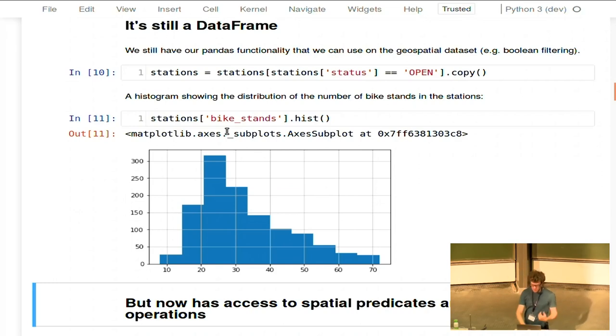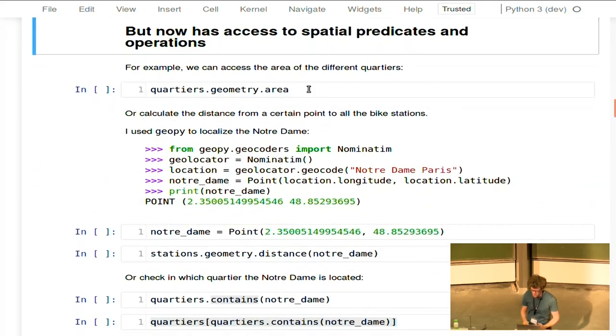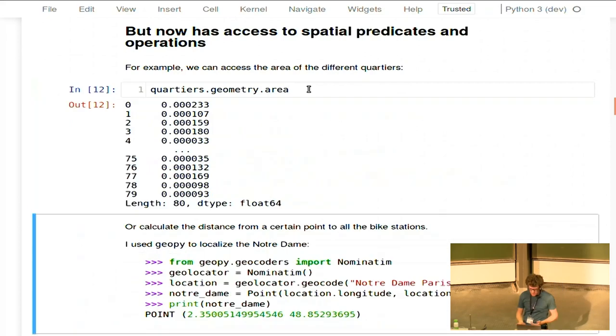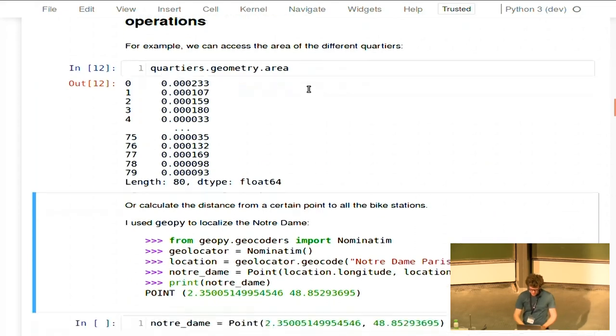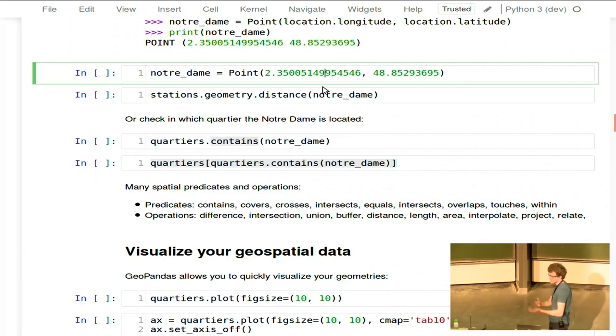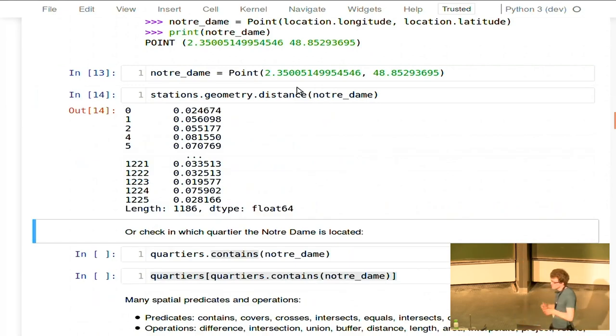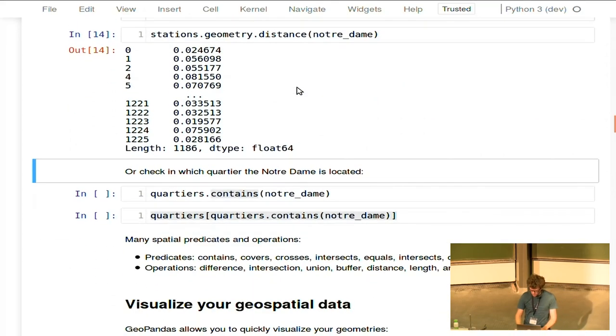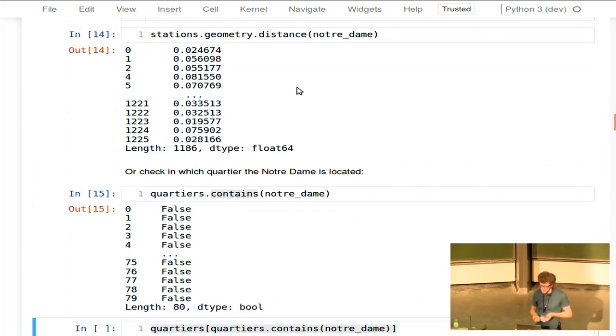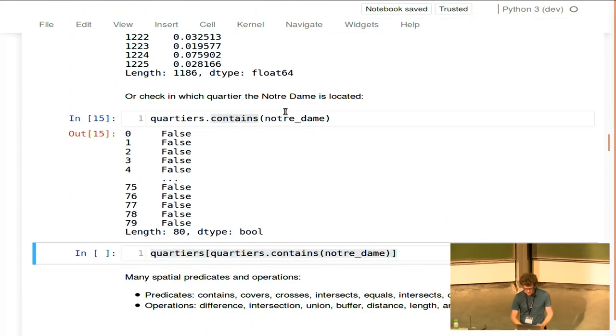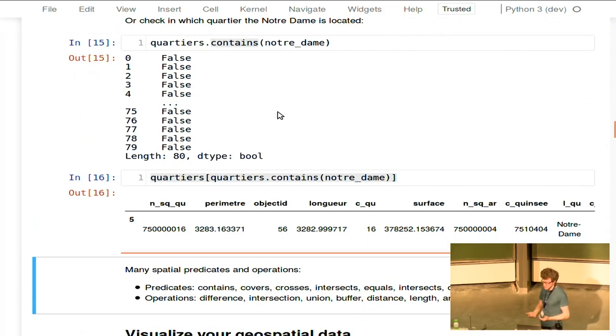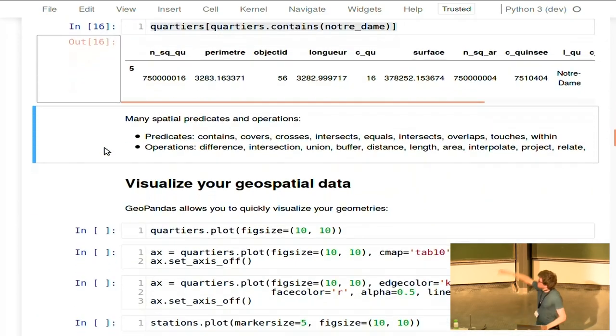But it's not just a data frame, so we now have access to many of the spatial operations. For example, of the different quartiers, I want to know the area. And those are available as an attribute, you have many other attributes as well for the different properties of those geometries. I checked a certain point, but for example, I could also, for my stations, calculate the distance to a certain point. The coordinates are for the Notre Dame, in the center of Paris, so I can easily calculate for all my points in my stations data frame, the distance to that single point. And then I can, for example, also check which of my quartiers, which of my districts contains this point, which will give you a boolean series, and with that you can filter, and you see it's actually the quartier, which is called Notre Dame, which is not surprising, of course. There are many more of those spatial operations, and all the common ones are implemented.